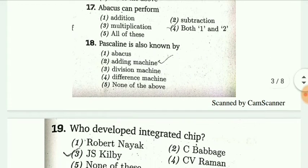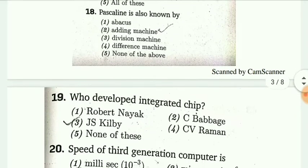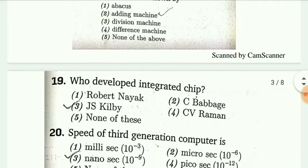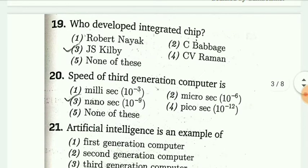The abacus can perform dash. The abacus can perform addition and subtraction. The Pascal line is also known as an adding machine. Next, who developed integrated chips? The answer is J. Kilby.